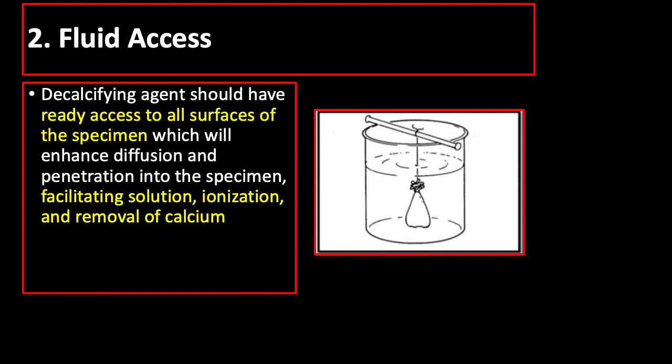Next factor is fluid access. The decalcifying agent should have ready access to all surfaces of the specimen, which will enhance diffusion and penetration into the specimen, facilitating solution, ionization, and removal of calcium. The selected pieces of tissue are usually placed in a gauze bag and suspended in a liberal amount of decalcifying solution by means of a thread to ensure complete decalcification and protect the tissue from any precipitate that may settle at the bottom of the container.